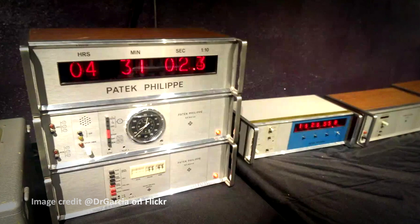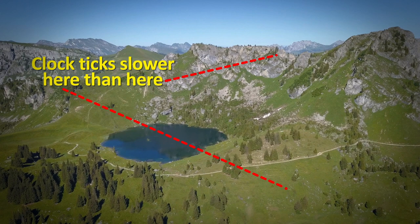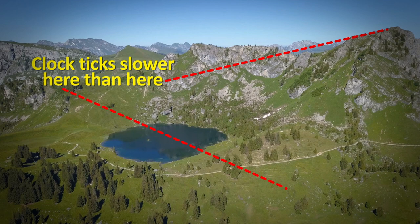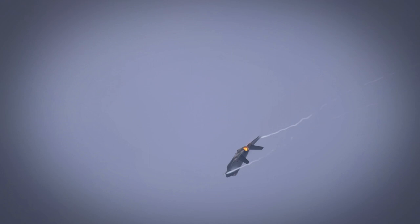For example, when scientists placed one atomic clock at sea level and another synchronized atomic clock on the top of a mountain, they found that the clock at sea level ticks slightly slower than the one on the mountain. Similarly, atomic clocks placed on a fast moving jet were found to tick slightly slower than synchronized clocks at rest on the ground.